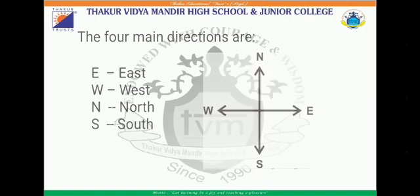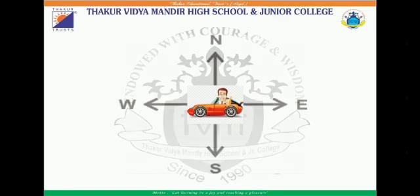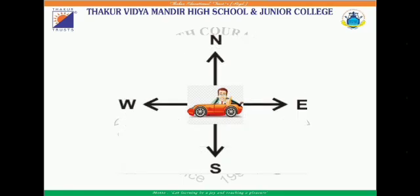My dear students, let us do this activity. I am sure it will help you understand the directions in an appropriate way. Take a paper and draw a picture of a car. Let us assume that the car is facing the west direction. Observe this properly. The left side of the car will be the south direction. The right side will be the north, and the east side will be behind the car — that is, the opposite direction of west.